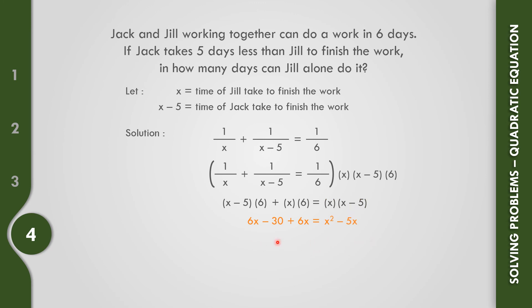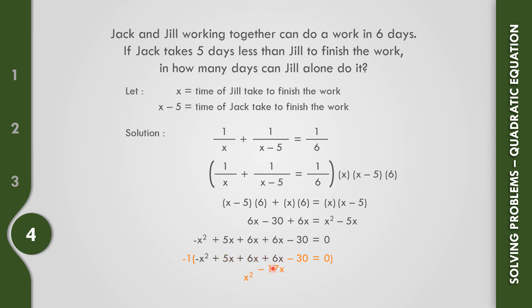Combining like terms, we get negative X squared plus 5X plus 6X plus 6X minus 30 equals 0. Multiplying all by negative 1: X squared minus 17X plus 30 equals 0.